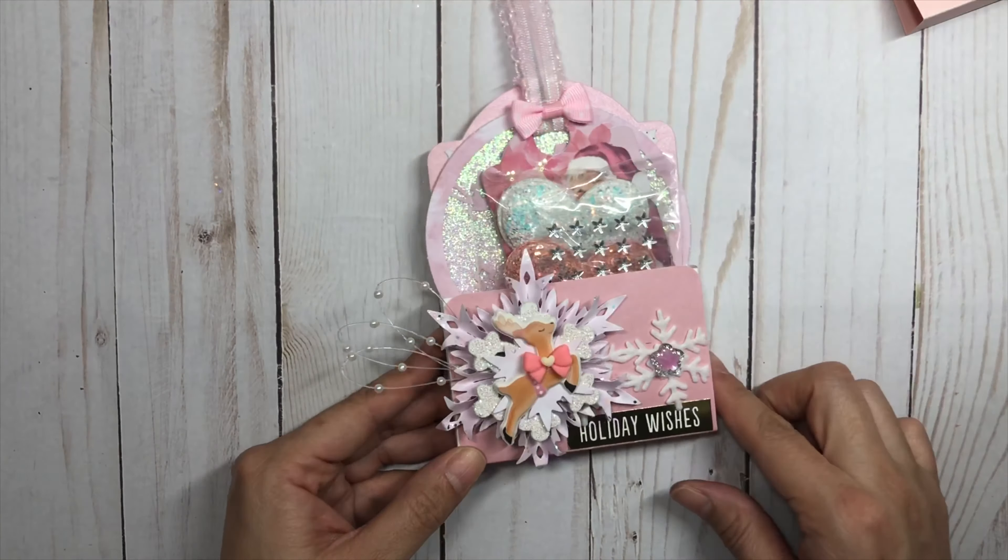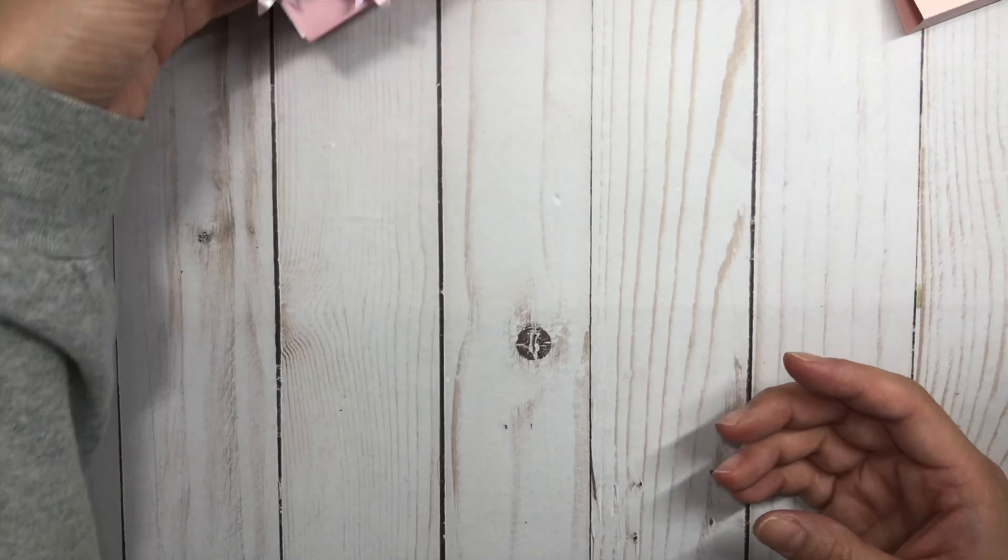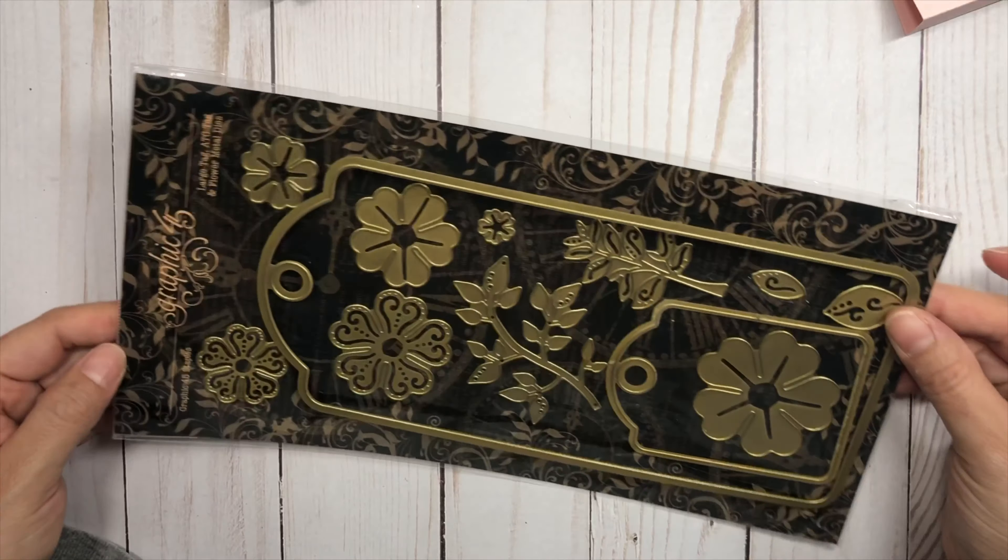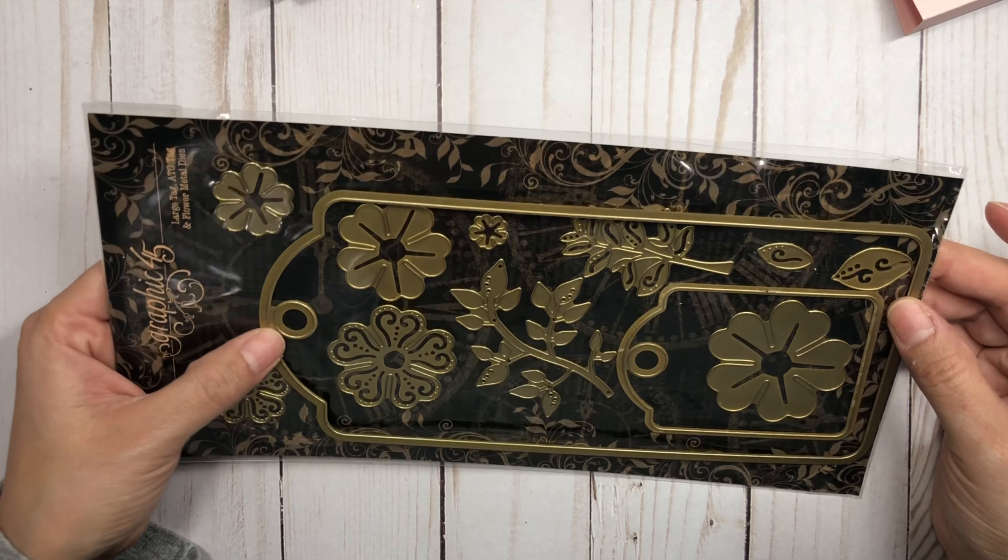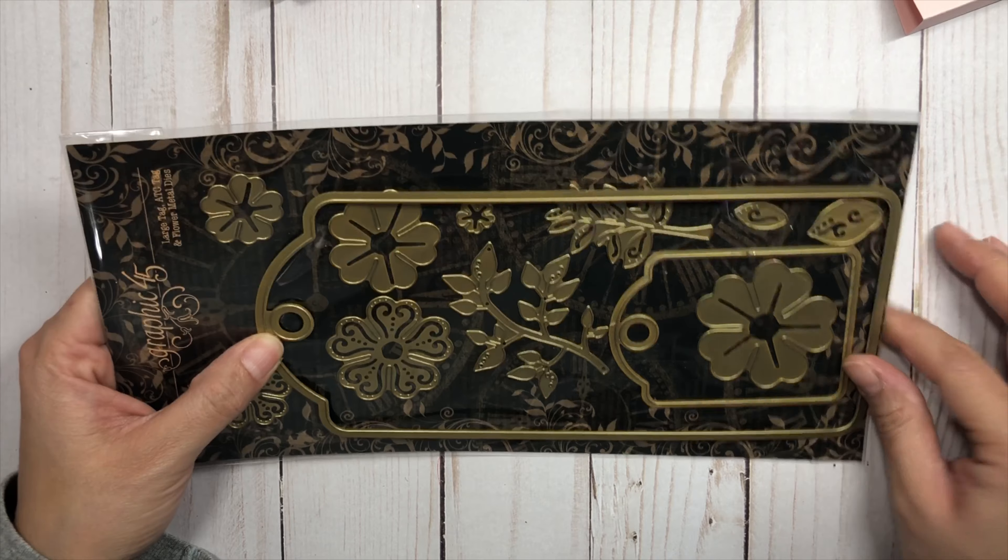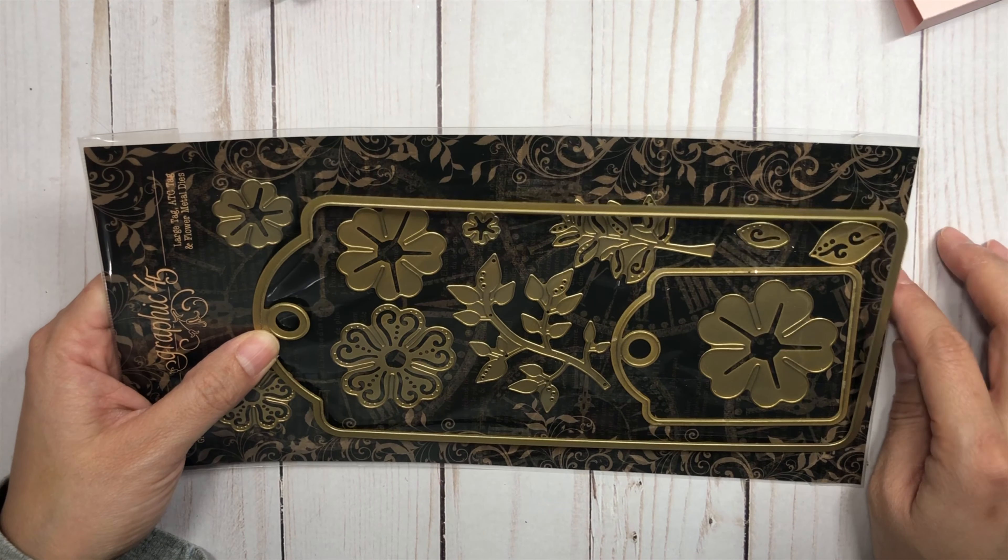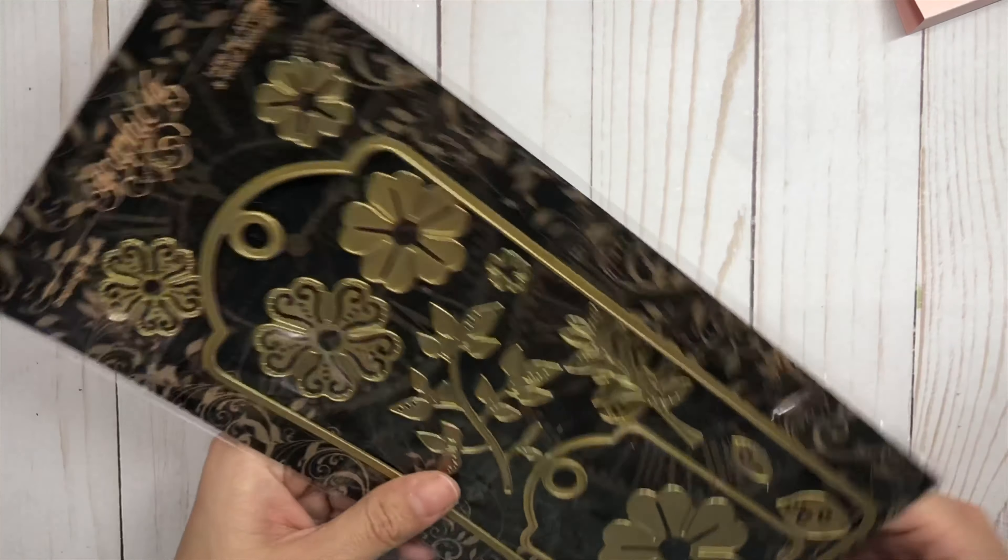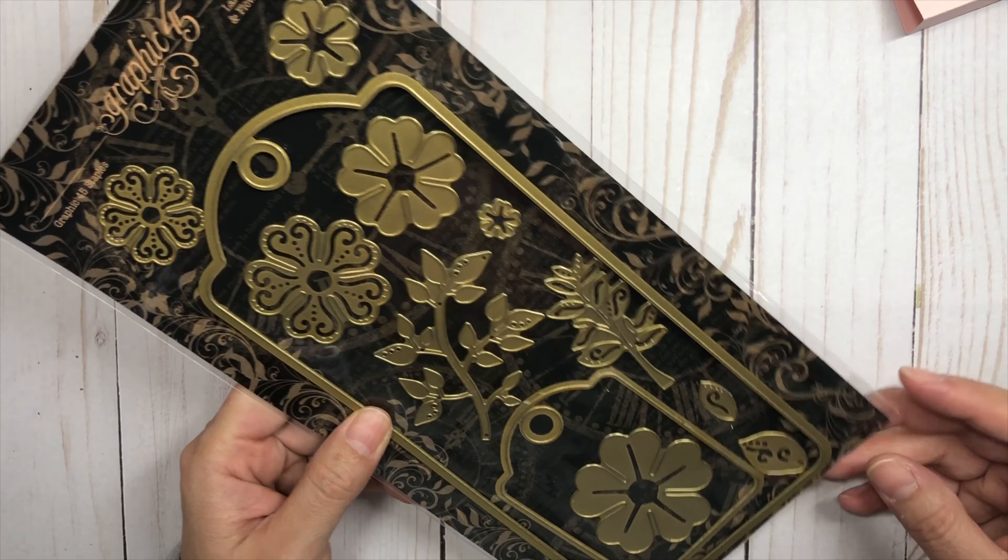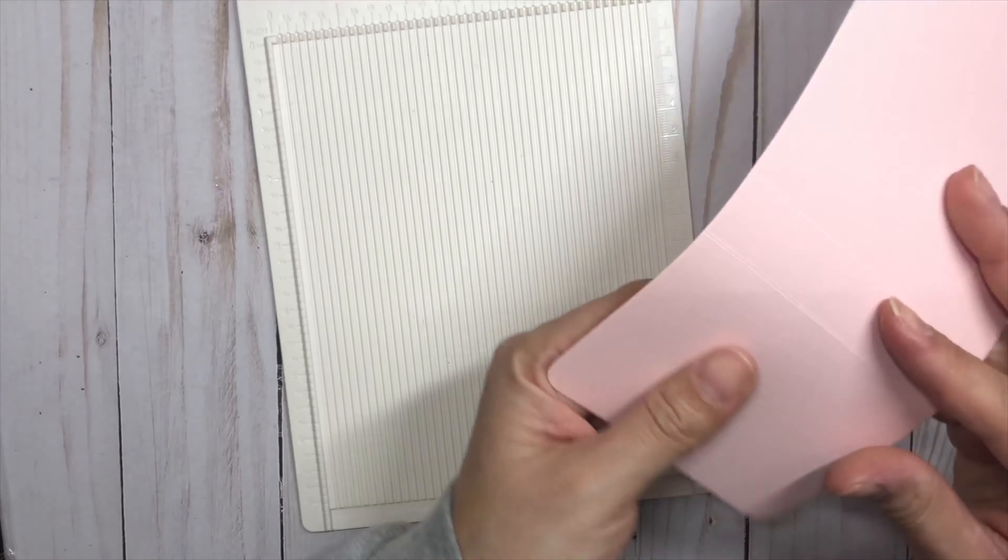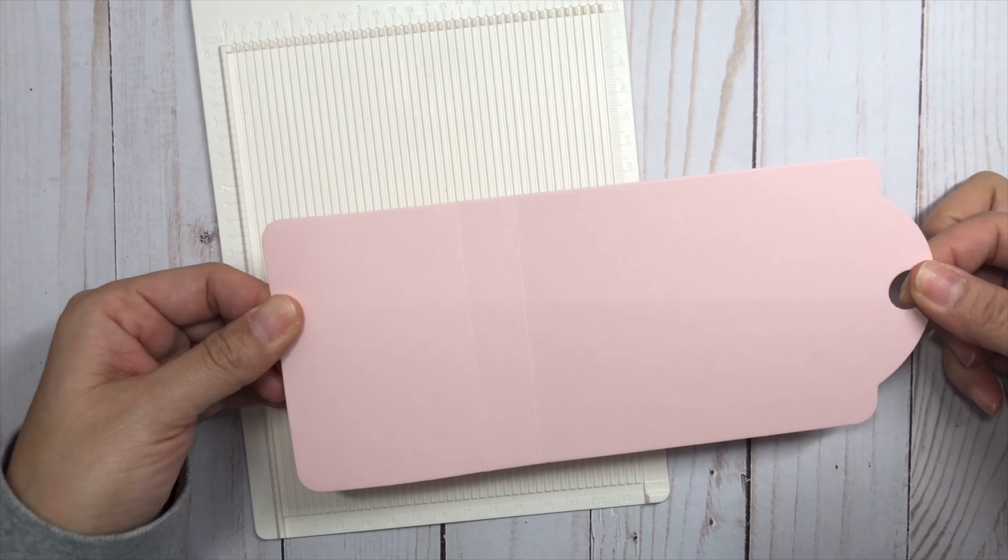So this is the die that I use, and it's a Graphic 45 large ATC die. Just a little note: you will need your longer platforms to cut this. The standard size will not do only because this is about nine inches, and the standard is I think a little over six. So you do need your longer platforms. Now I have already taken the liberty of die cutting out the tag, and let's just dive right into the tutorial.